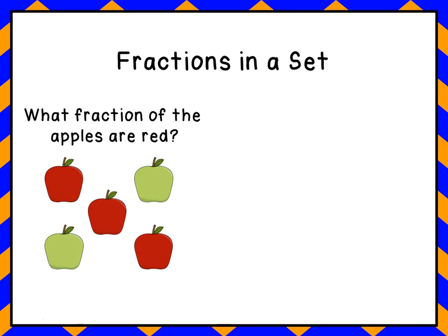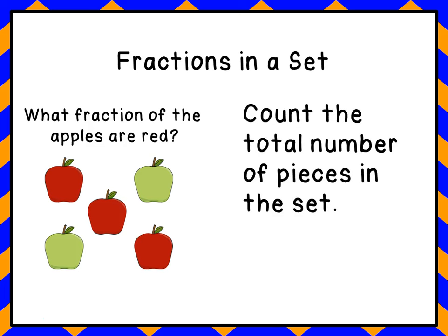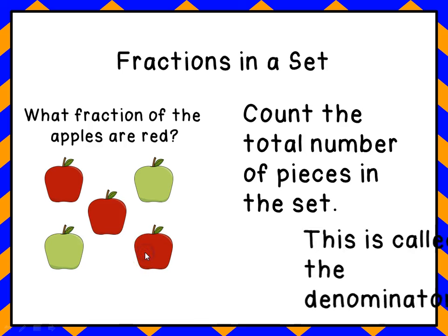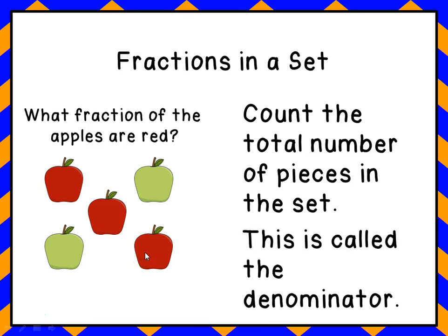Alright, so we're looking at fractions in a set — taking a group — and the question is: what fraction of the apples are red? The first thing we want to do is count the total number of pieces in the set. In this particular one, we have one, two, three, four, five apples, and that's called the denominator. That's the number that goes on the bottom.